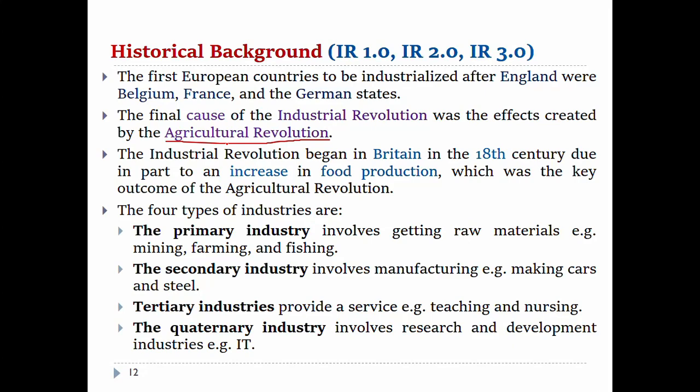The industrial revolution began in Britain in the 18th century. As the industrial revolution began to improve, food production also increased. The first result turned out to be increased food production.